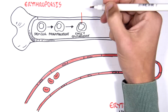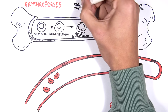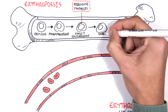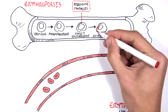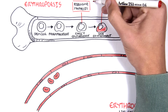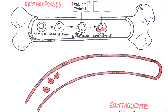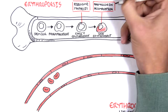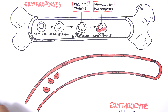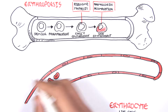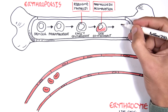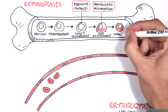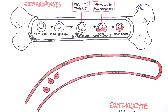In the early erythroblast stage we see ribosome synthesis. This is important because once the early erythroblast becomes a late erythroblast, the ribosomes are synthesizing a lot of hemoglobin, and so we have hemoglobin accumulation. Hemoglobin is the molecule within red blood cells that actually carries the oxygen. This late erythroblast can then develop into a normoblast, and the normoblast already contains all this hemoglobin.